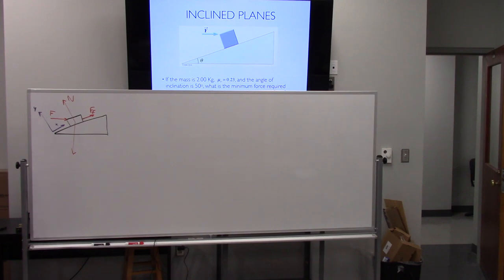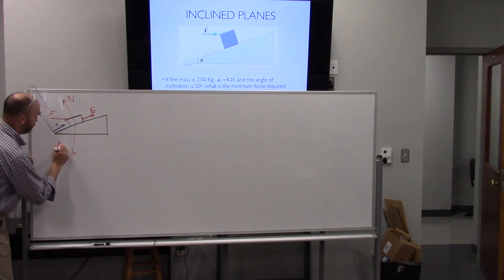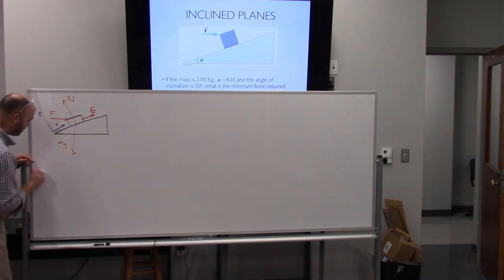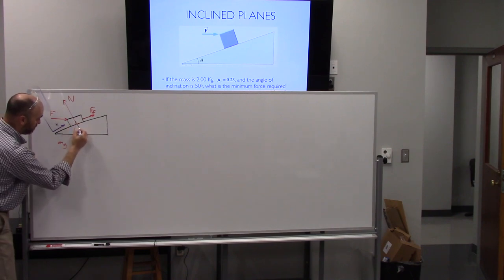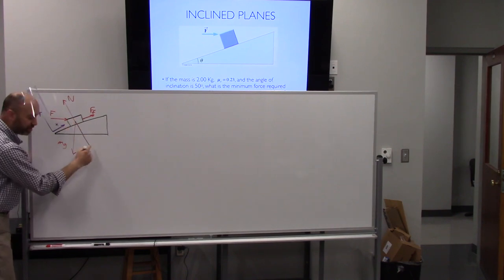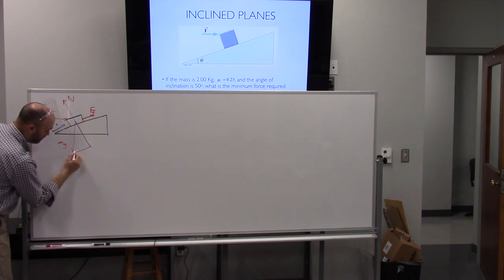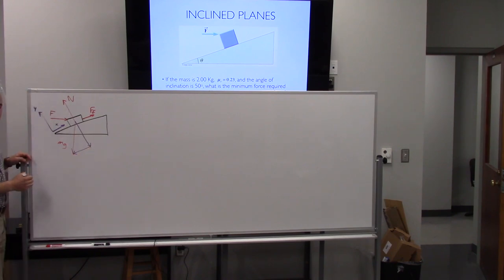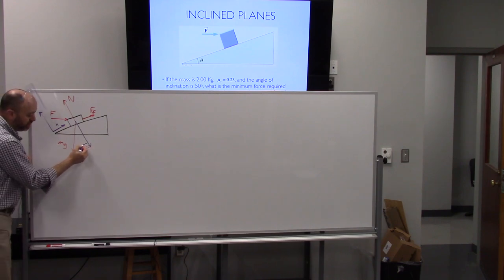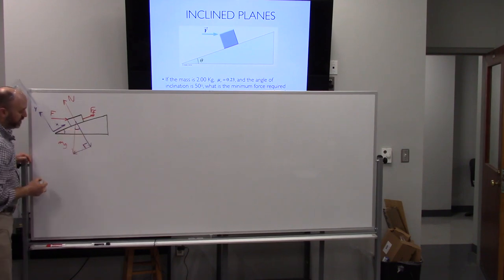Now, friction's always parallel to the surface. So friction's going to go this way, parallel to the surface. So with that said, we've got two crooked vectors here. Where's our coordinate system? This way. Y is perpendicular, x is parallel. This angle up here and this angle down here, they're the same thing.